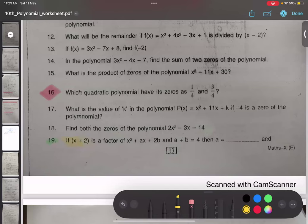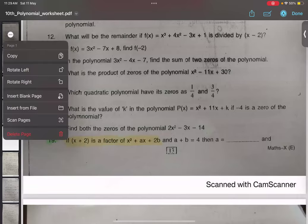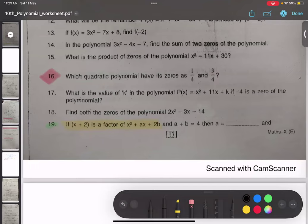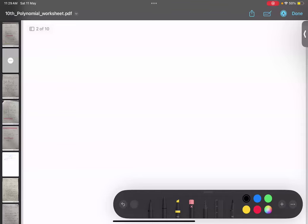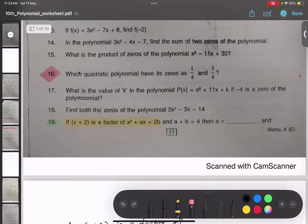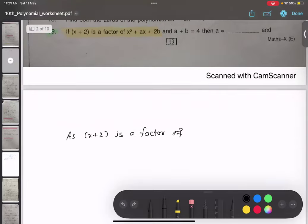Question number 19 is: if x plus 2 is a factor of this, so when they are saying factor, that means the remainder is what? The remainder is zero. Factor is x plus 2. As x plus 2 is a factor of x squared plus ax plus 2b.